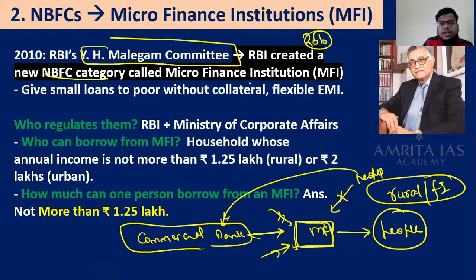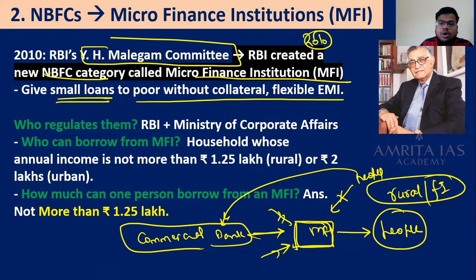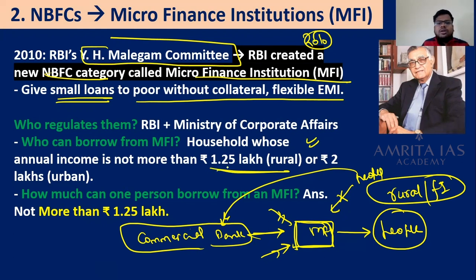MFIs are very important for financial inclusion. In 2010, after the recommendation of the Maligam Committee, RBI created a new NBFC category — Microfinance Institutions — that gives small loans without collateral and with flexible EMIs. RBI mainly regulates them along with the Ministry of Corporate Affairs. The household whose annual income is not more than Rs. 1.5 lakh (rural) or Rs. 2 lakh (urban) can avail MFI loans, with a maximum loan of Rs. 1.25 lakh per person.